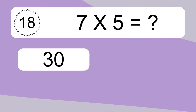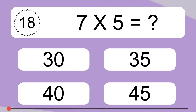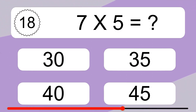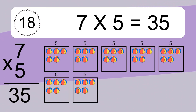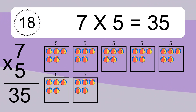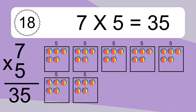7 times 5 equals what? 7 times 5 equals 35. We have 7 boxes and each box has 5 colorful balls inside. If you count all the balls in all the boxes together, you will have 7 times 5 balls. This equals 35 balls.